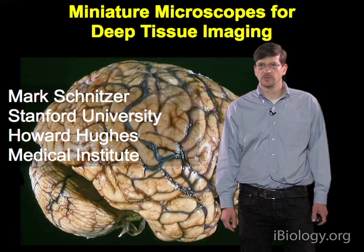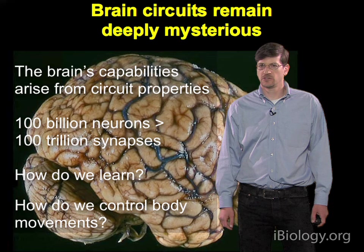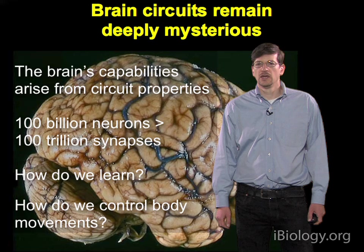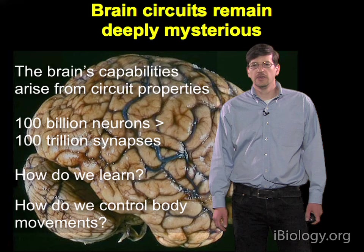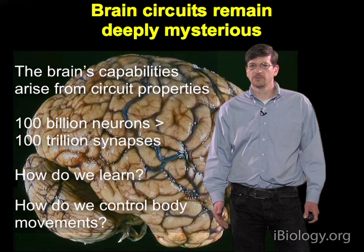My lab focuses on issues pertaining to neuroscience, particularly at the circuit level. Brain circuits remain deeply mysterious. Nonetheless, some of the brain's most fascinating properties arise from the circuit attributes. The numbers involved in trying to dissect neural circuit function are daunting indeed. In the human brain, there are approximately 100 billion neurons and over 100 trillion synapses.